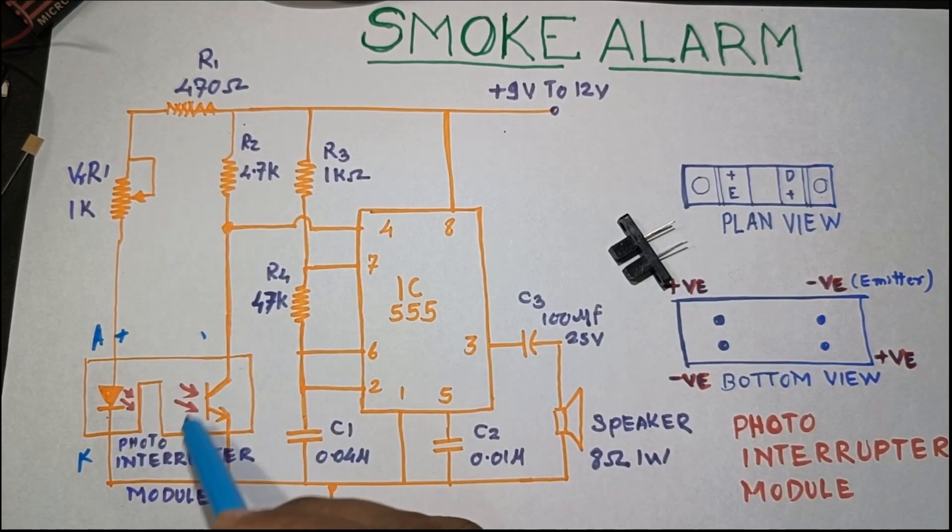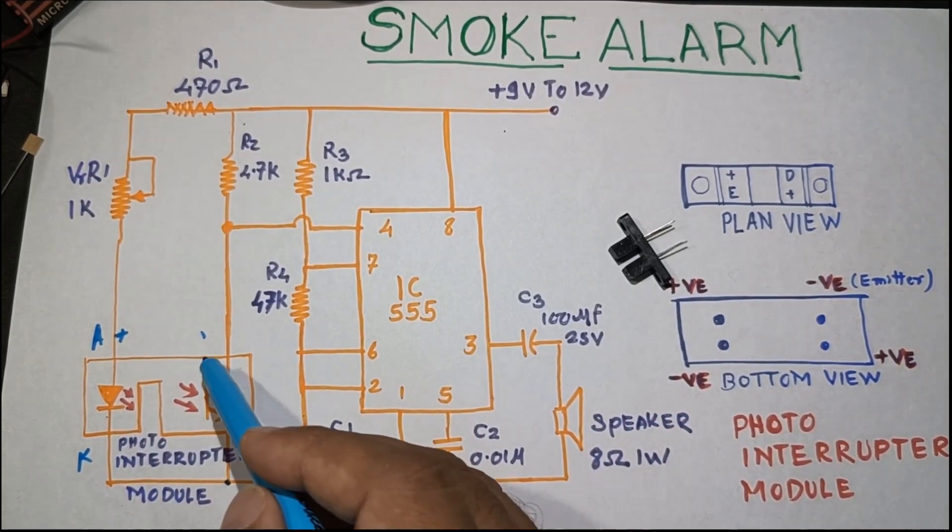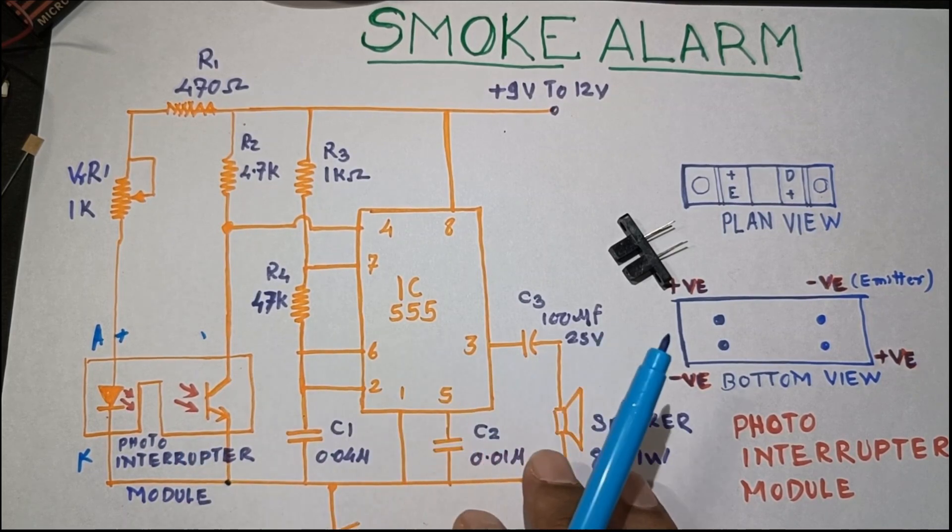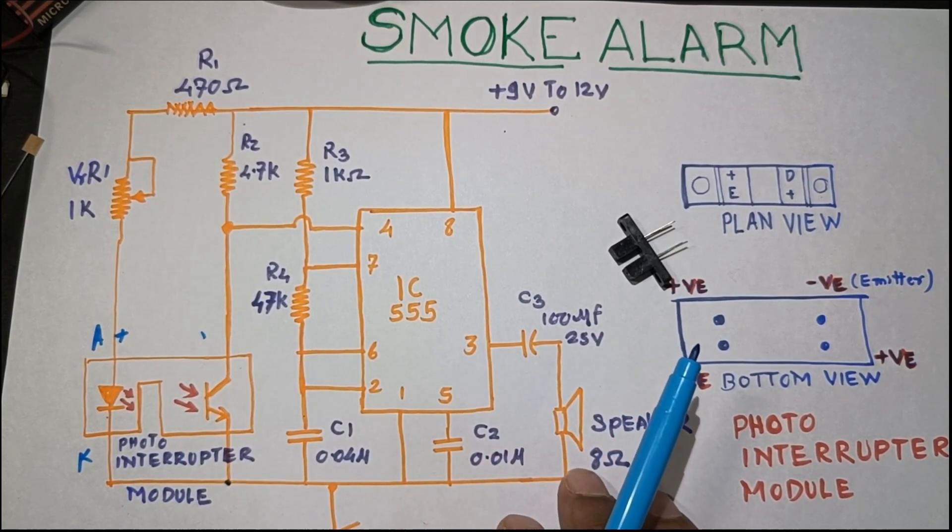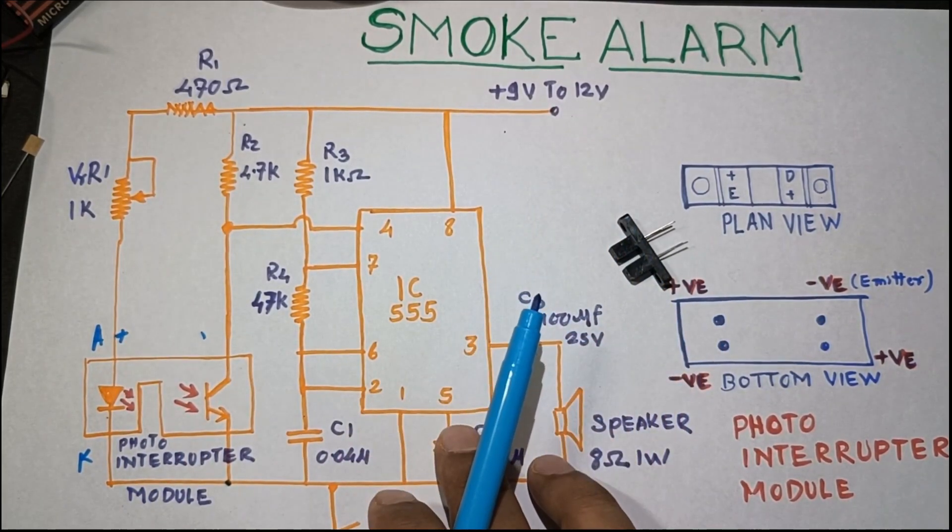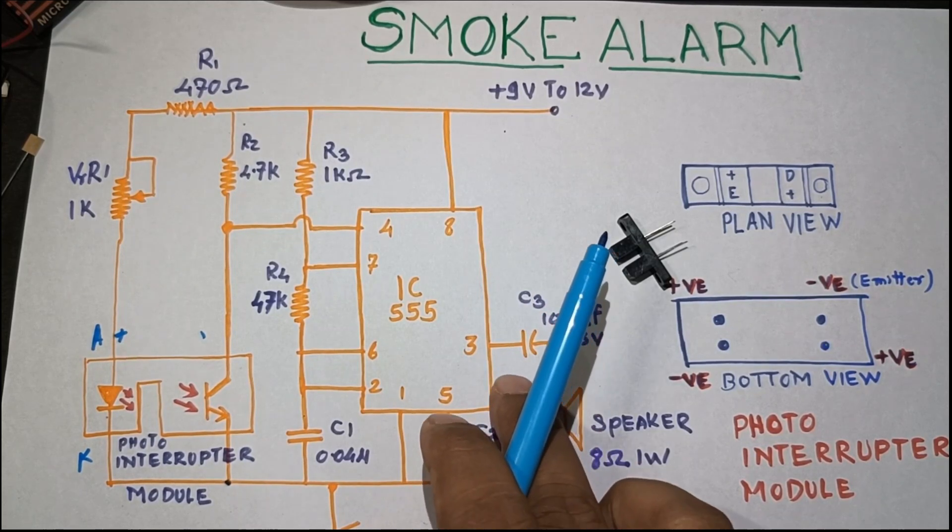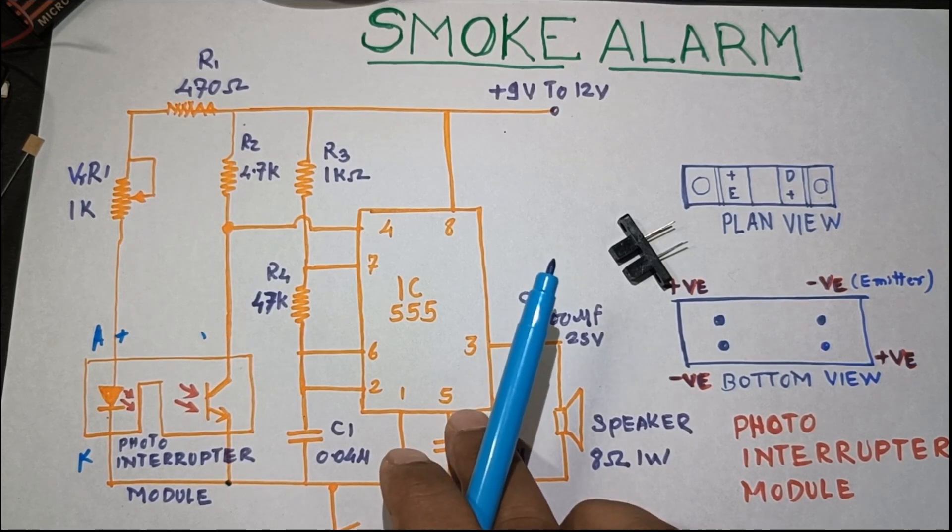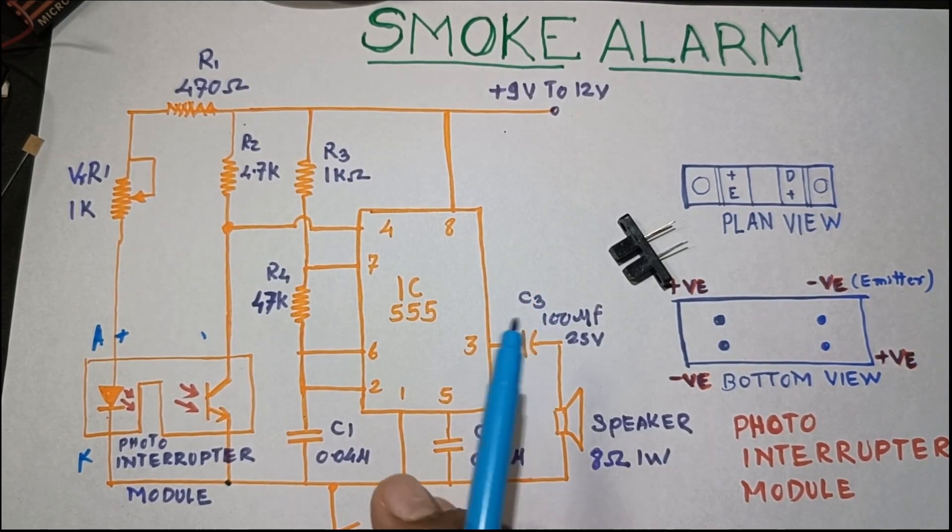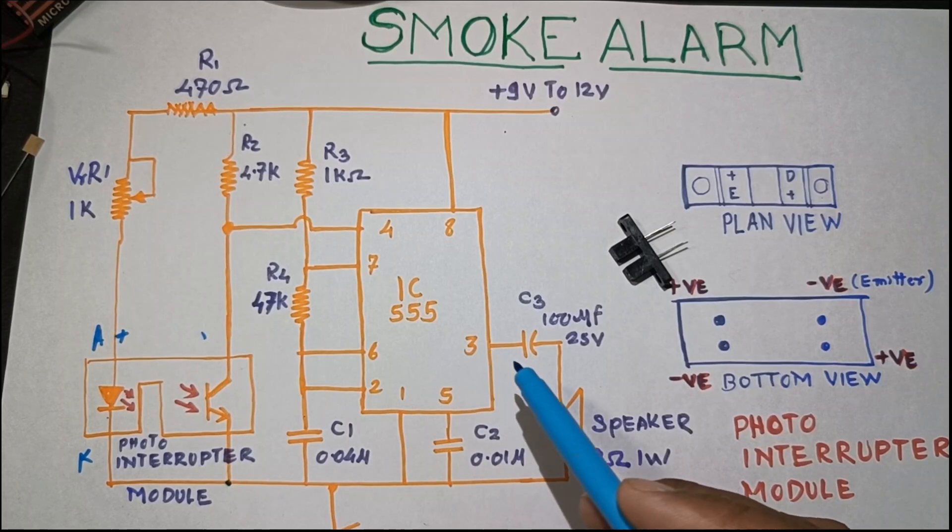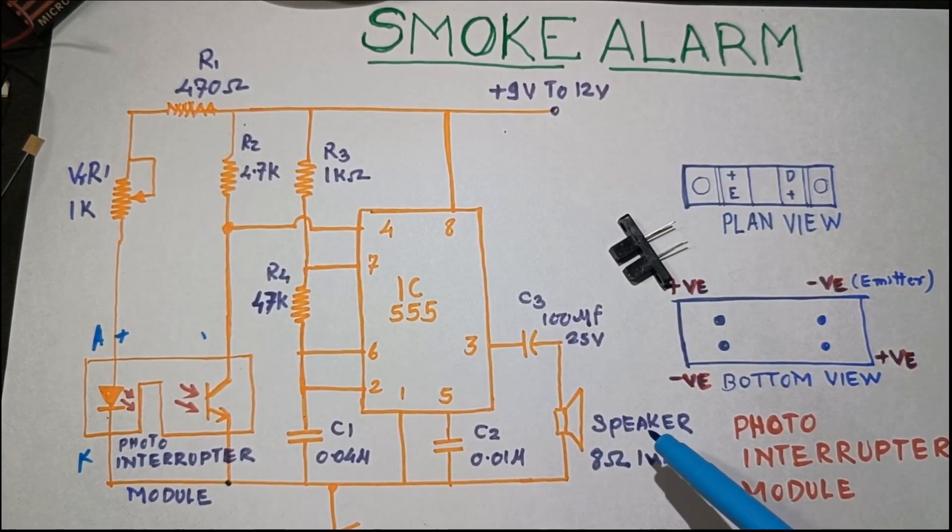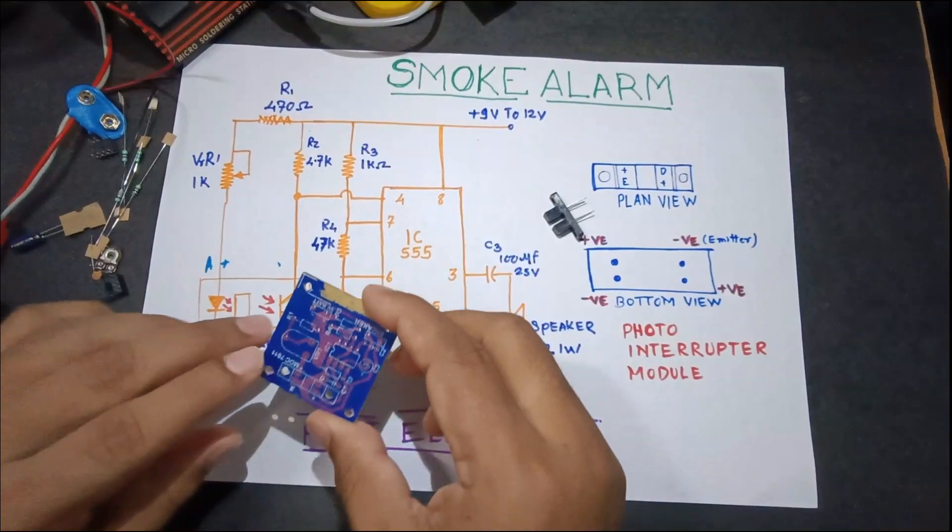This is how this photo interrupt module detects the smoke. In this case, the IC555 is designed as an astable multivibrator, as an AF oscillator which oscillates at 379 hertz frequency. This output is given to the speaker and it will start buzzing.